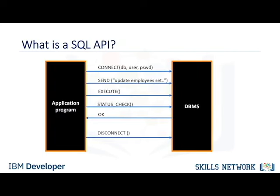An Application Programming Interface is a set of functions that you can call to get access to some type of service. A SQL API consists of library function calls as an Application Programming Interface for the DBMS. To pass SQL statements to the DBMS, an application program calls functions in the API, and it calls other functions to retrieve query results and status information from the DBMS. The basic operation of a typical SQL API is illustrated in the figure. The application program begins its database access with one or more API calls that connect the program to the DBMS. To send a SQL statement to the DBMS, the program builds the statement as a text string in a buffer and then makes an API call to pass the buffer contents to the DBMS. The application program makes API calls to check the status of its DBMS request and to handle errors.